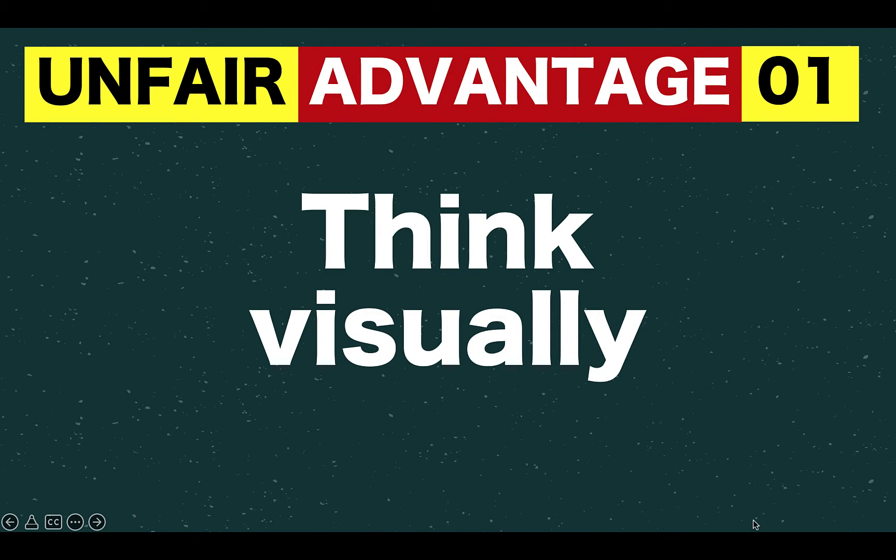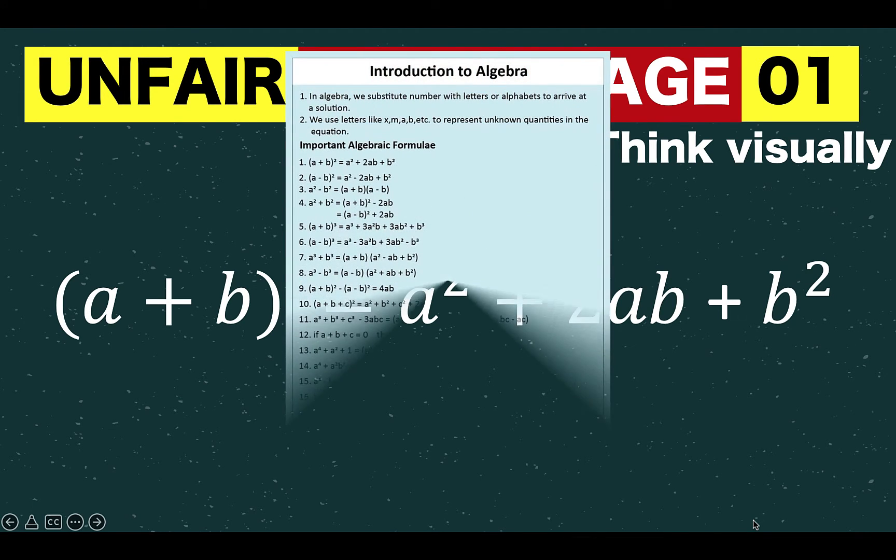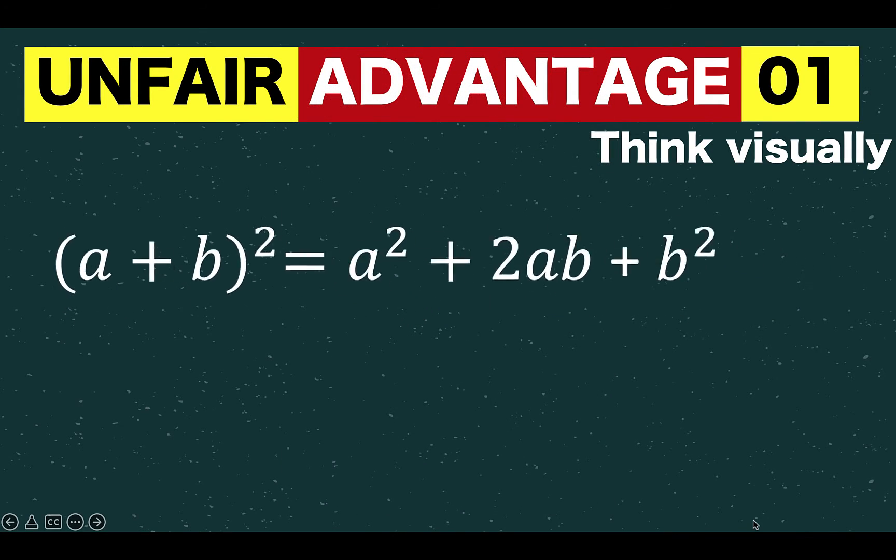The first one is superior math students think visually. For example, if a student is given this equation, the square of a plus b is equal to a squared plus 2ab plus b squared, many students would proceed to memorizing this formula. There's no problem with that if you are only memorizing one formula. But if you are given a bunch of formulas like this, let's say we have 22 formulas containing letters a and b, chances are you would be very confused. Now, if you approach math visually, this formula would look like this.